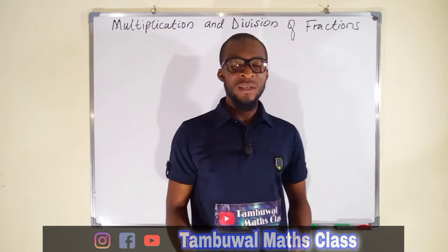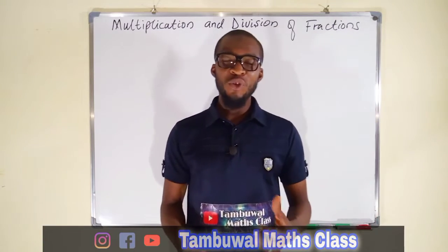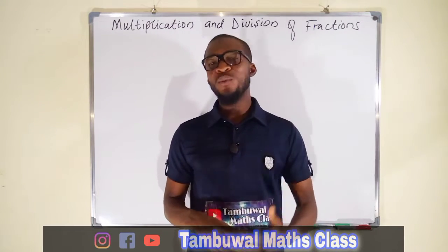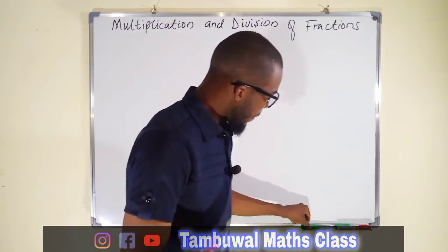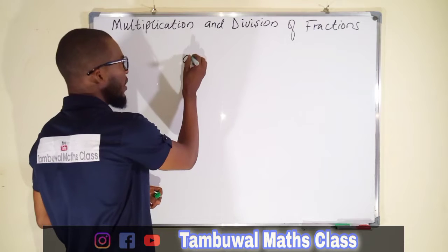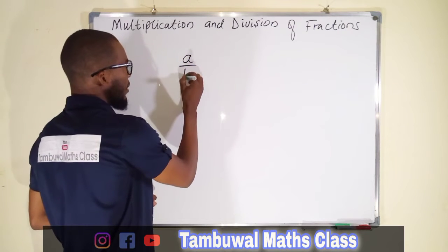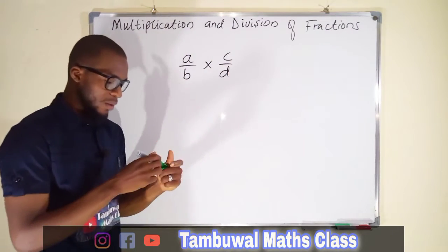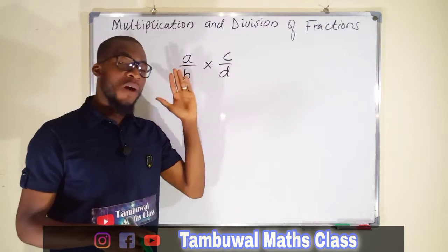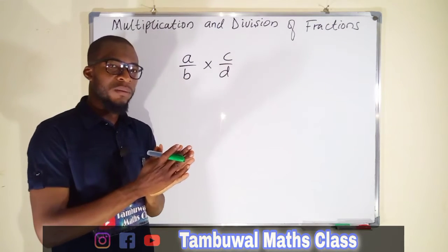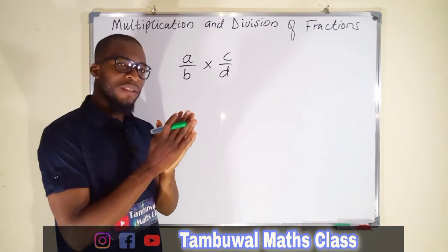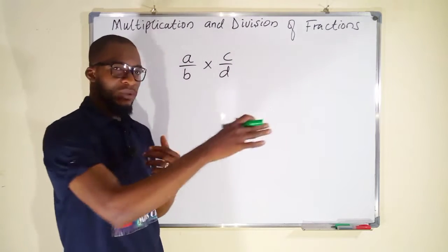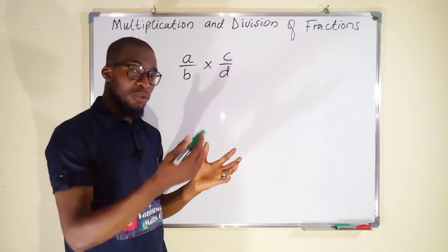Hello, good morning everyone. In today's tutorial we are going to look at how to multiply or divide fractions. Let us start with multiplication first. Suppose you have a fraction A divided by B, multiplying another fraction C divided by D. The way to multiply them is to multiply all the numerators together separately and multiply all the denominators separately, then reduce to the lowest terms if possible.